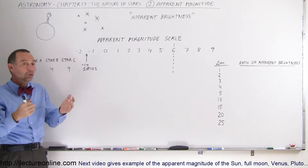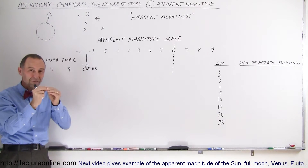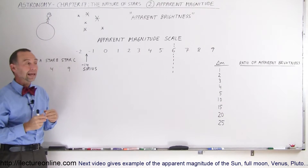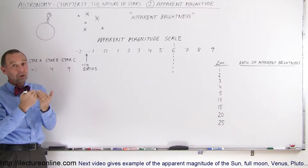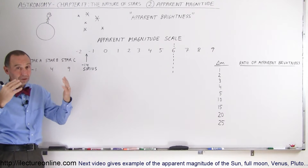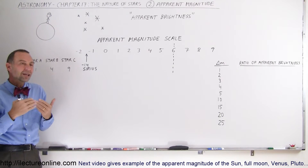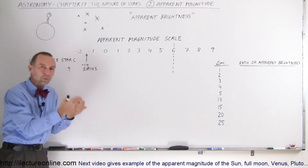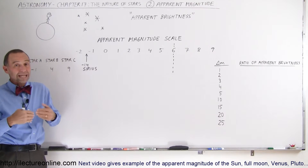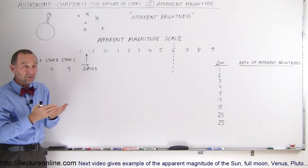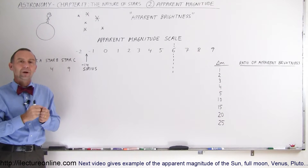It could be that there's a really bright star that's really far away and looks very faint to us. And there could be a very small star that's really close and appears very bright to us. So apparent magnitude doesn't tell us anything about the actual brightness or luminosity of the star, but rather the apparent brightness.